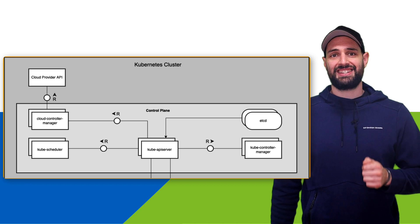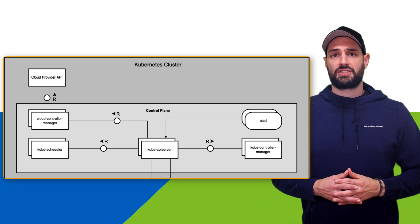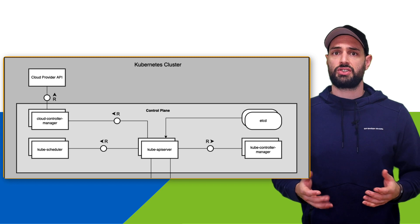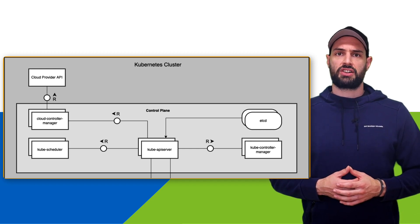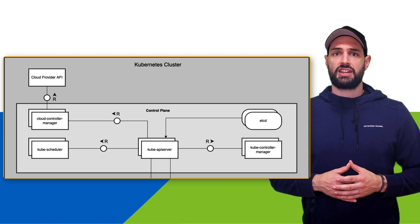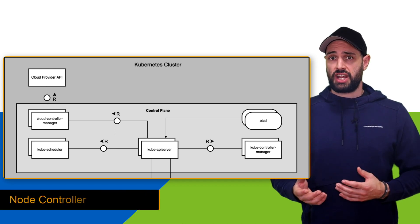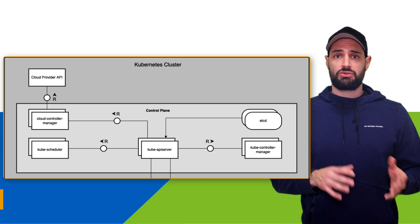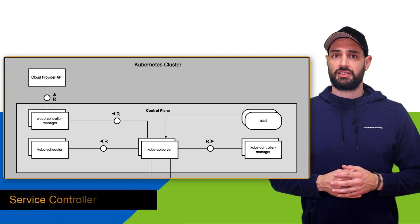An important component is the ETCD, which is a consistent and highly available key-value store for persisting cluster data. All cluster data gets persisted in the ETCD. Next we have the cloud controller manager, which provides cloud-specific control logic and allows you to link your cluster to a cloud provider's API. It ensures a clear separation between components that interact with a cloud platform and those that interact directly with your cluster. It includes a node controller for monitoring nodes on the cloud provider, a route controller for establishing routing in the underlying cloud infrastructure, and a service controller for managing the cloud provider's load balancers.